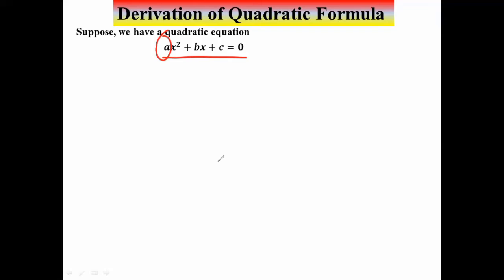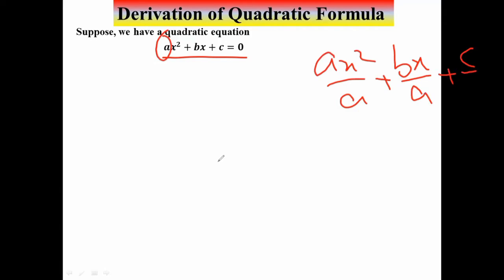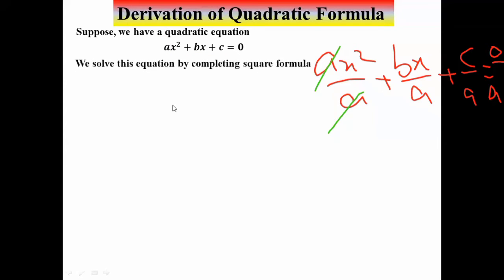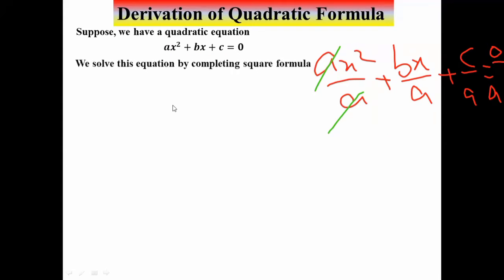Here we have coefficient a, so we divide the whole equation by a. When I divide the whole equation by a: ax²/a + bx/a + c/a = 0/a. The a's cancel, and we get x² + (b/a)x + c/a = 0, since 0/a is always equal to 0.